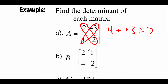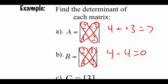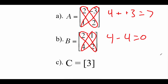Looking at example B, again group diagonals: 2 times 2 is 4, and 1 times 4 is 4, so 4 minus 4 is 0. The last example is a 1x1 matrix, and the determinant of a 1x1 matrix is just the entry itself. On this one we've got 3, so the determinant is 3.